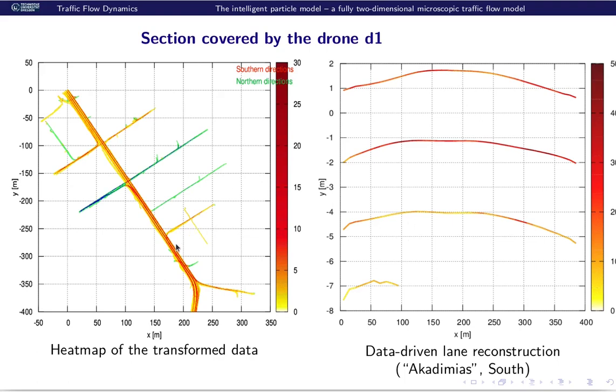First I looked at the data. So this is a heat map of the transformed data. There were no lanes given. So first, I did a data-driven lane reconstruction of a certain road, the road Academias, which is one-way traffic directed to the south-east. And the data-driven lane reconstruction, suitably rotated, of course, gives basically three lanes. And here are four lanes, which just will turn away.